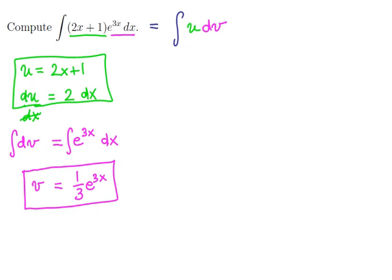And so according to integration by parts, this is the same thing as u times v minus the integral of v times the differential du.